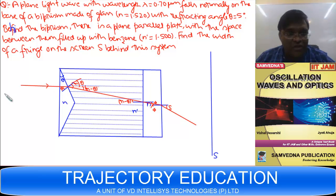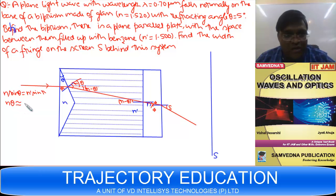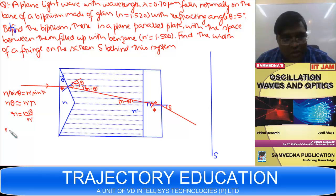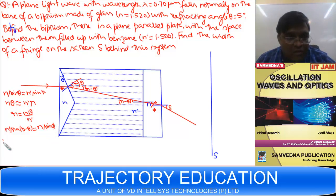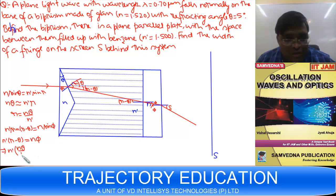Applying Snell's law at the first interface: N sin θ = N' sin R. Since θ and R are very small: N·θ = N'·R, so R = Nθ / N'. Applying Snell's law at the second interface: N' sin(R − θ) = N sin φ. For small angles: N'(R − θ) = N·φ. Substituting R: N'(Nθ/N' − θ) = N·φ, giving Nθ − N'θ = N·φ.